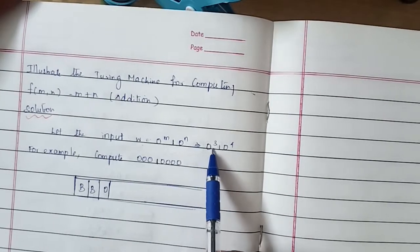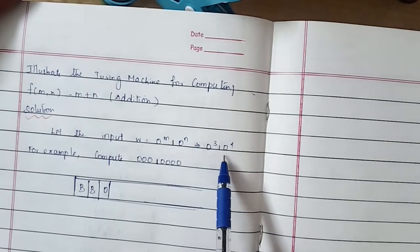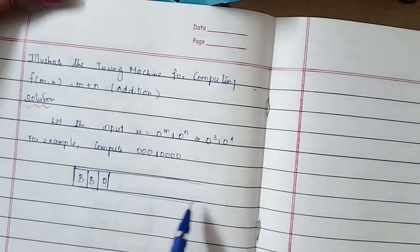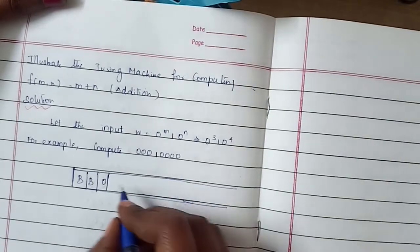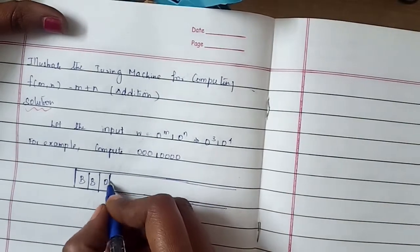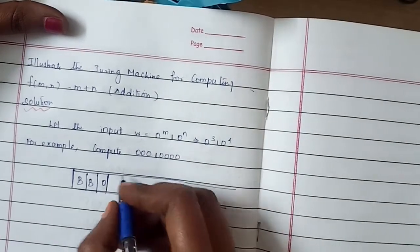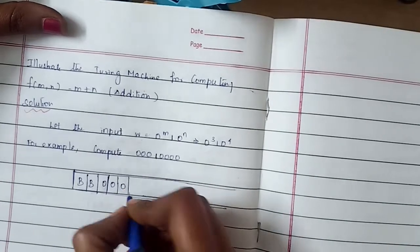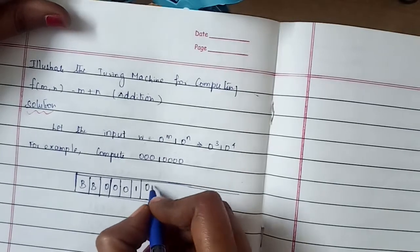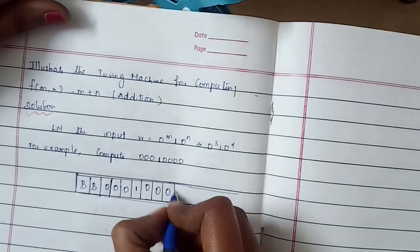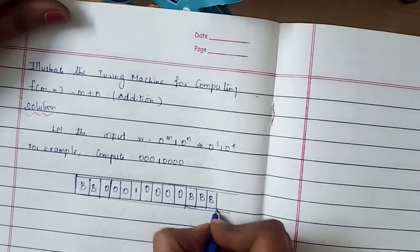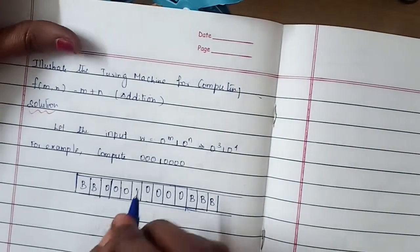For this example, I am taking three zeros followed by a separator and followed by four zeros. When we see this problem in terms of a Turing machine, the tape contains blank symbols at the ends, and in between you have the inputs: 0 0 0, then the separator, then 0 0 0 0, followed by a blank symbol. This is how it is arranged in a Turing machine.